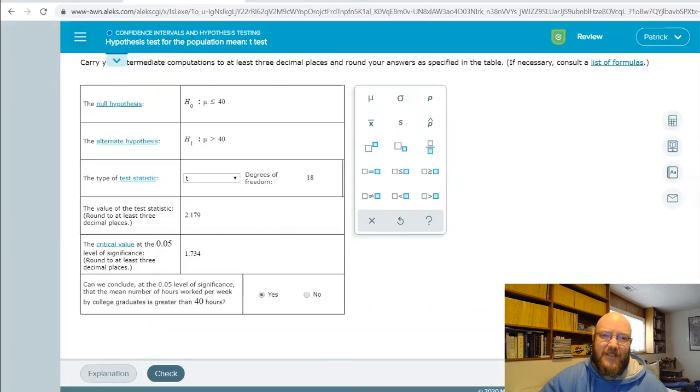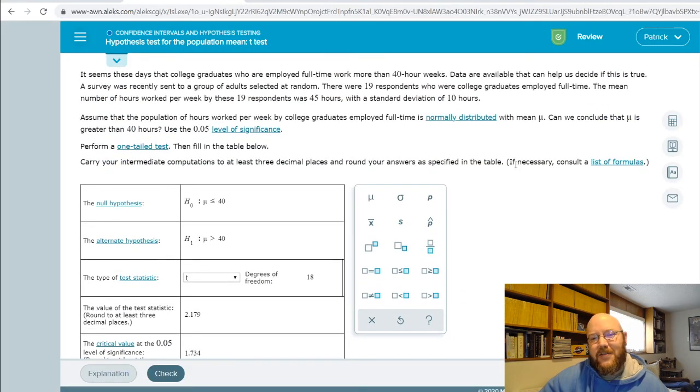So there we go for a t-test. Just remember the only other type of ones you're going to see is where it's a two-tail test. Remember with a two-tail test, rather than saying it's more or less than like we have here, it'll just say differs or has changed. And of course, then your null hypothesis is that your sample mean is actually equal to the population mean. And then your alternate would be the sample mean does not equal your population mean.